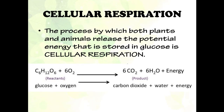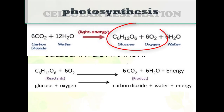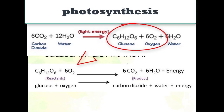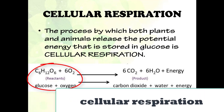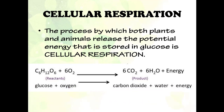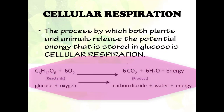The process by which both plants and animals release the potential energy stored in glucose is called cellular respiration. In cellular respiration, the products that were made in photosynthesis — the glucose and the oxygen — are then used. Here is the equation for cellular respiration: glucose and oxygen are used to produce carbon dioxide, water, and energy in the form of ATP that the cells can use.